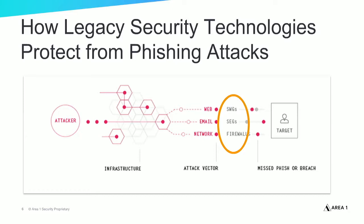Let's look at how traditional security technologies protect from web-based phishing attacks. Organizations often rely on secure web gateways and firewalls. Secure web gateways monitor web traffic and block user requests to known malicious websites. Firewalls inspect network traffic, detecting and blocking malware command-and-control communication to known malicious sites. Both security technologies are updated frequently with the latest threat intelligence as new malicious sites are discovered. However, the threat intelligence updates these technologies rely on are mostly derived from analyzing active attacks.